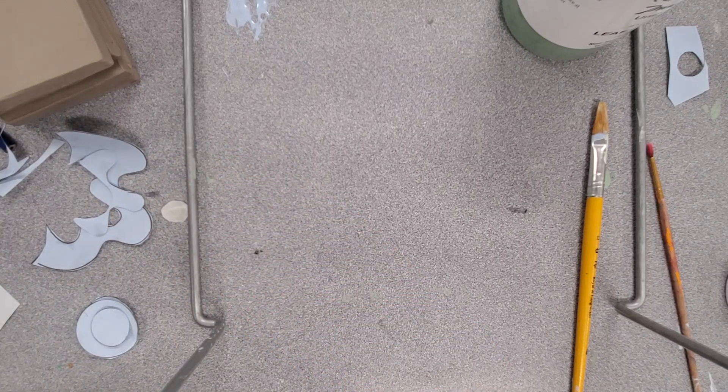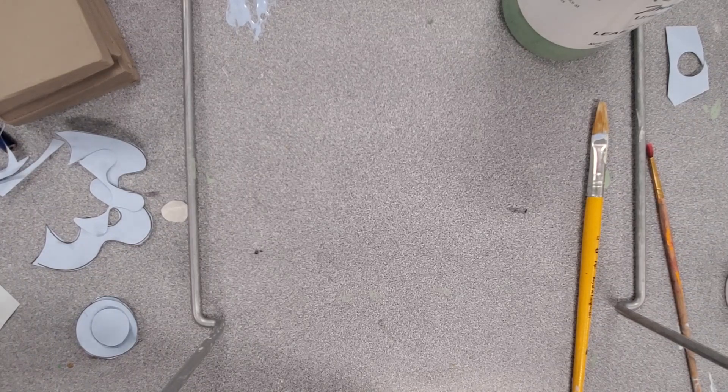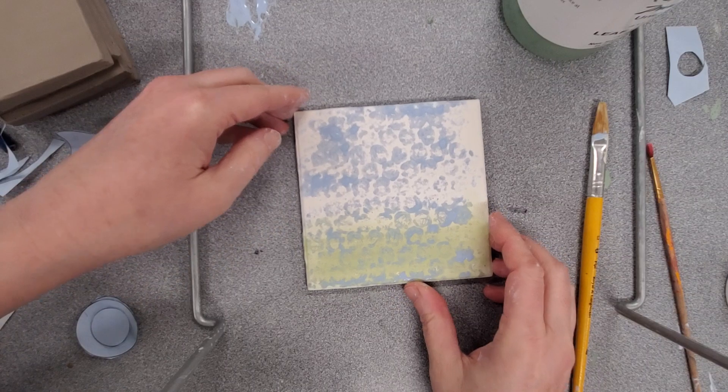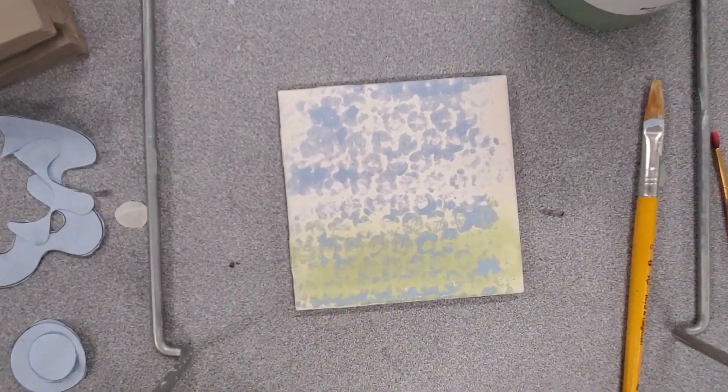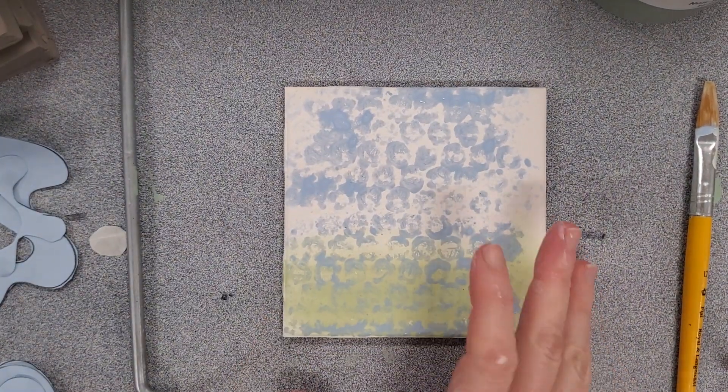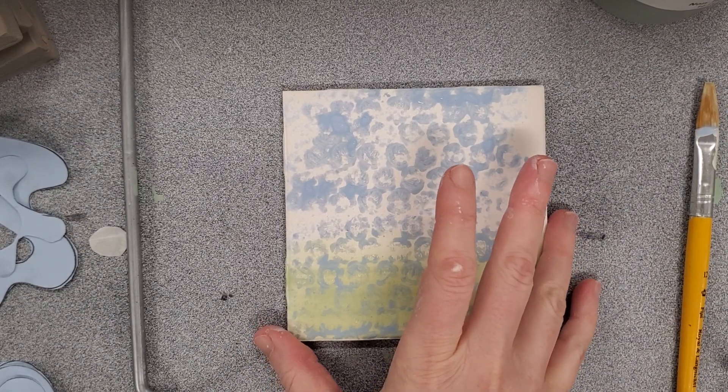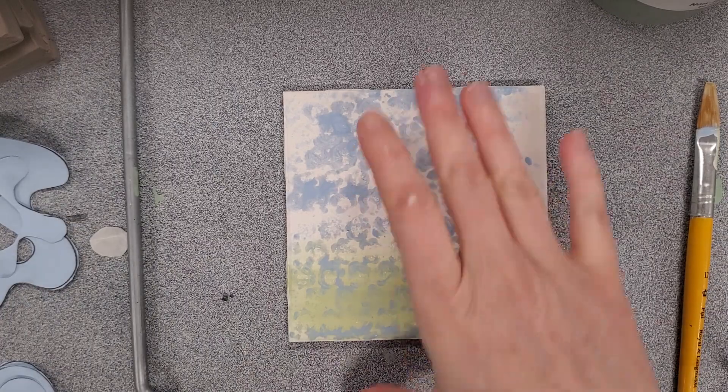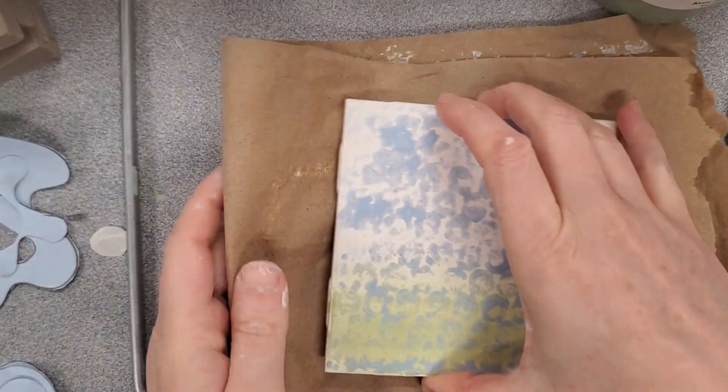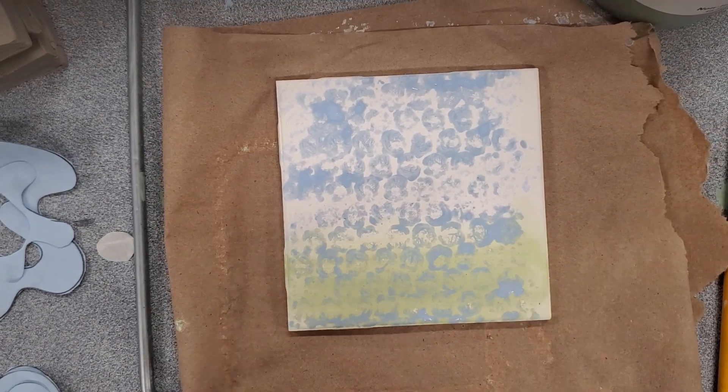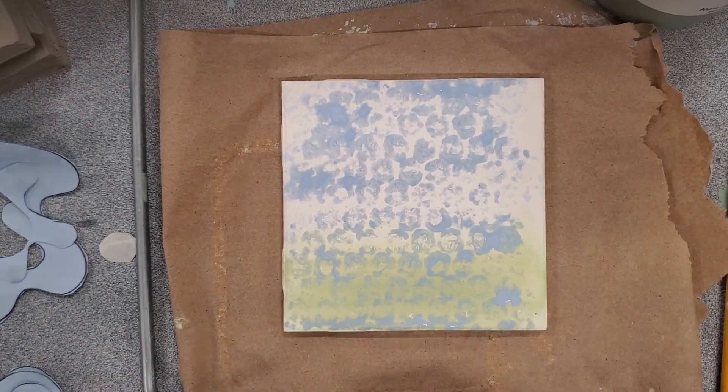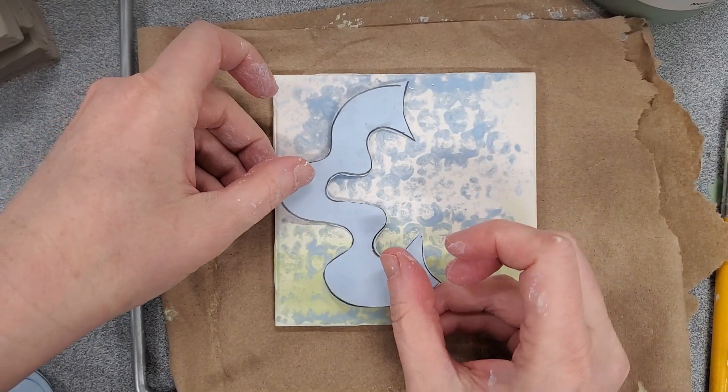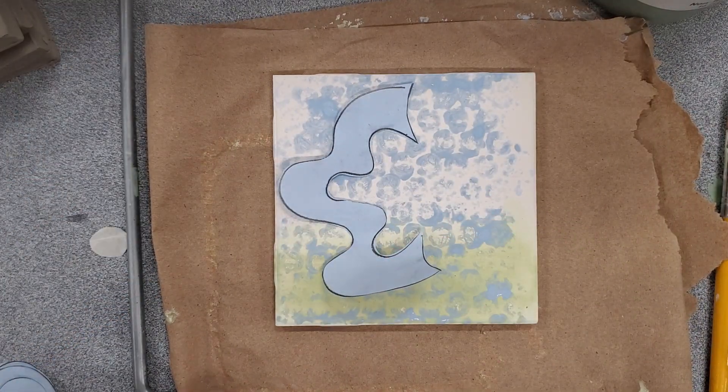Once your bisque tile is dry, mine is pretty much mostly dry, you want this to be dry before you put the contact paper on. I'm going to make sure I'm working on a piece of paper towel. Now I'm going to figure out where I want to place my design.